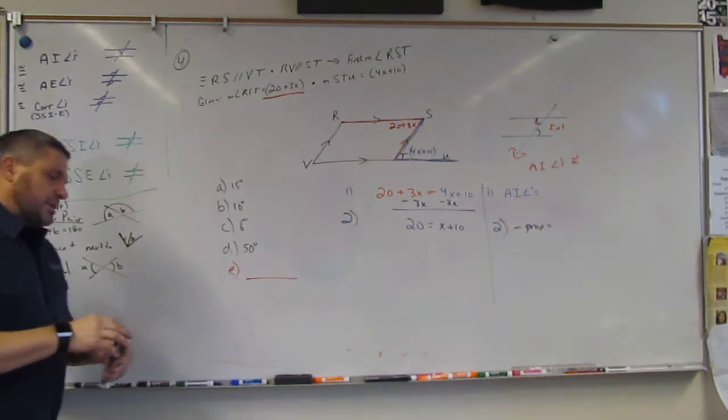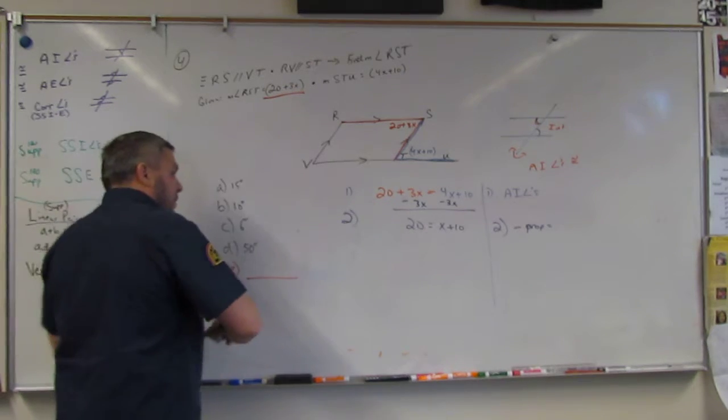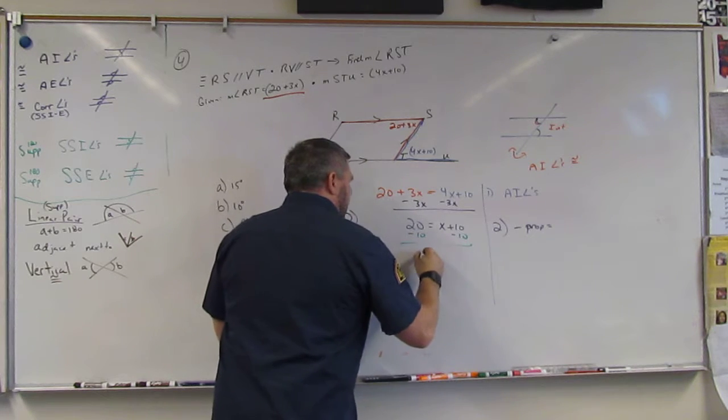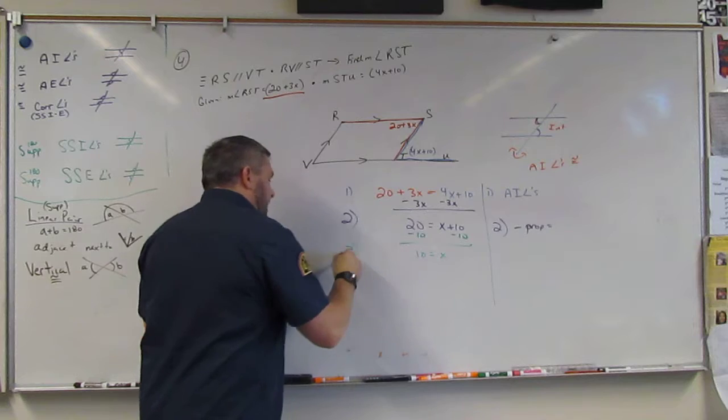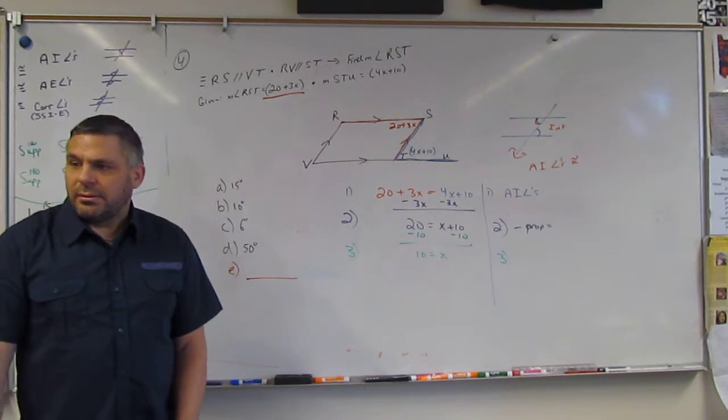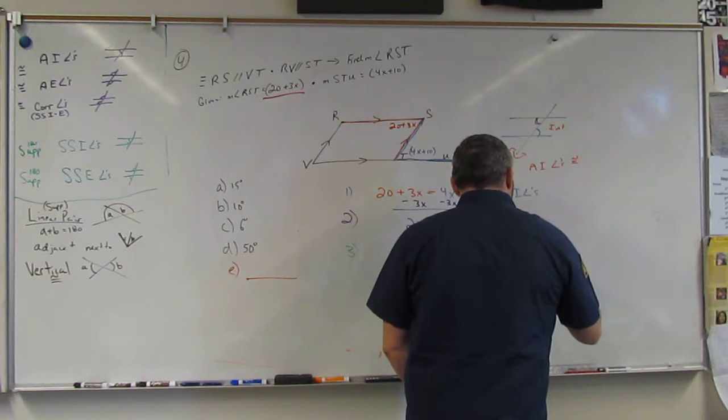Next. Minus 10. Minus 10. So 10 is equal to x. So what is that called? Subtraction property of equality. Subtraction property of equality.